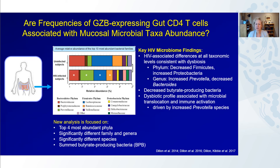We next looked at associations between these granzyme B-expressing cells and features of the mucosal microbiome, in particular taxa abundance, using microbiome data from a previously published study on the same individuals. The key microbiome findings were HIV-associated differences at all taxonomic levels consistent with dysbiosis — changes at the phylum level, at the genus level, and in particular an increased Prevotella abundance and decreased butyrate-producing bacteria. The dysbiotic profile was associated with microbial translocation and immune activation, primarily driven by Prevotella species abundance.